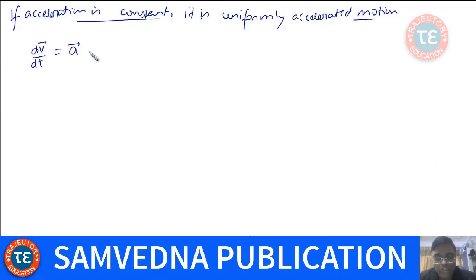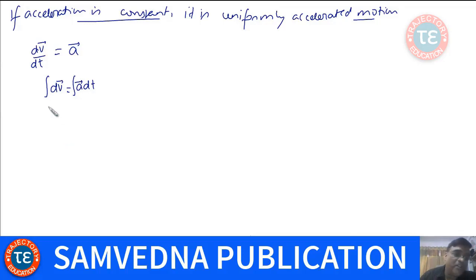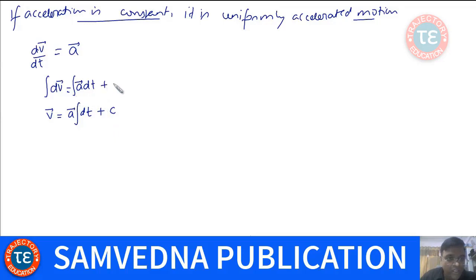The vector quantity is said to be constant only when its magnitude and direction are both constant. Since acceleration is a constant quantity, I can write dV = A dT and then integrate it. You must have introductory knowledge of calculus when you read this topic. If you don't have it, just go through the initial chapter of calculus — then only will you feel comfortable with this chapter.